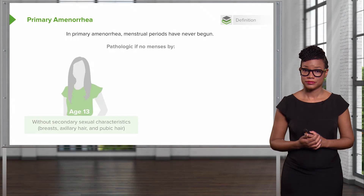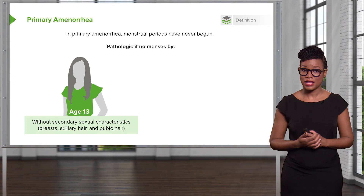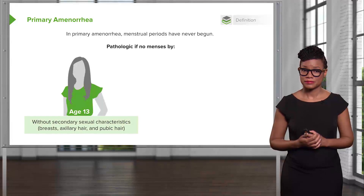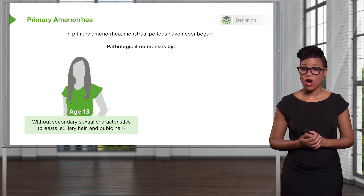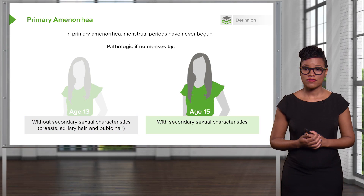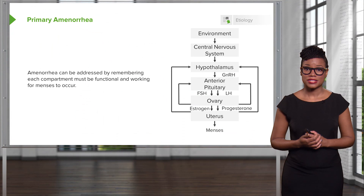Let's review primary amenorrhea. In primary amenorrhea, you have never had a menstrual cycle. This is pathologic if you are age 13 and have no secondary sexual characteristics — breasts, axillary, and pubic hair are all secondary sexual characteristics. By age 15, even if you have secondary sexual characteristics, if you have no menses, this is pathologic. It's very important to remember that the HPO axis must be intact for a young woman to have a menstrual cycle.